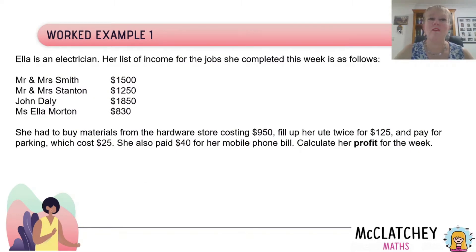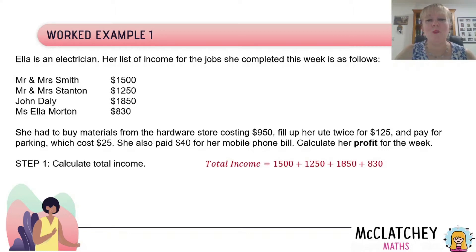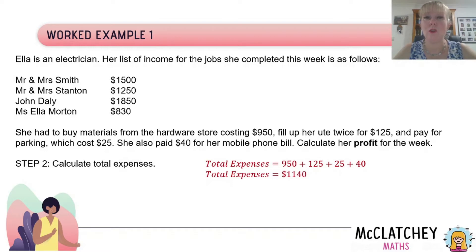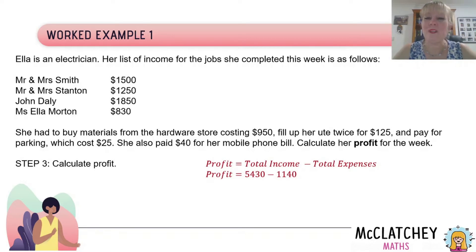In worked example one, Ella is an electrician. Her listed income for jobs completed this week totals $5,430. Her expenses include $950 for materials from the hardware store, $125 for fuel, $25 for parking, and $40 for her mobile phone bill, totalling $1,140. Using our formula — profit equals total income minus total expenses — her profit for the week is $5,430 minus $1,140, giving a profit of $4,290. Well done, Ella!